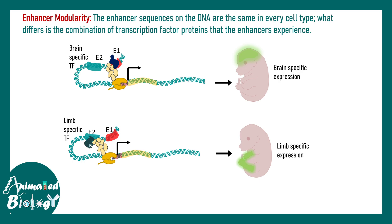There is a concept called enhancer modularity. The enhancer sequence present in DNA is the same between two different cell types — for example, a brain cell versus a cell of the hand. Yet different gene expression outputs are expected from the same sequence. It's not only about the sequence — it's about what interacts with the sequence.